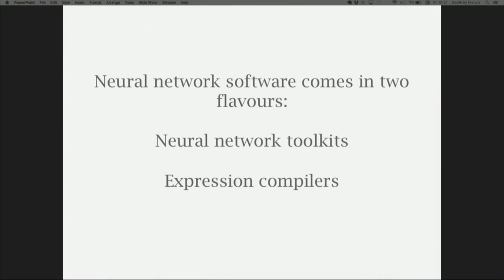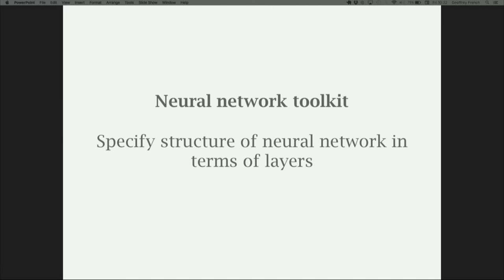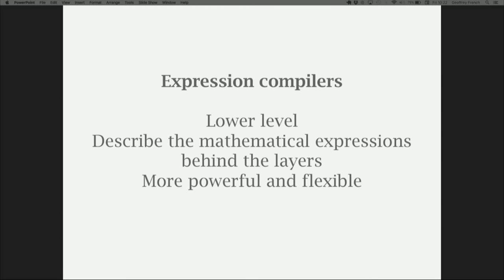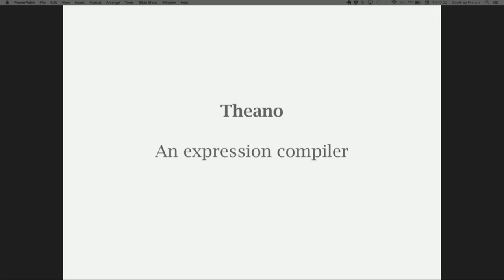Let's have a quick run over Theano. Neural network software comes in two flavors, or on a spectrum. You've got neural network toolkits at one end — quite high level, where you specify the network in terms of layers — and at the other end you've got expression compilers, which are somewhat lower level. With expression compilers, you describe the mathematical expressions behind the layers that effectively describe the network. It's a more powerful and flexible approach.